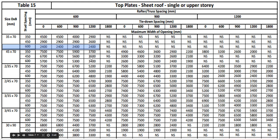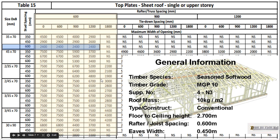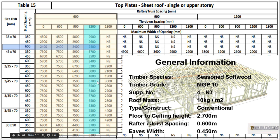Here's our span table, table 15 — top plates, sheet roof. Obviously you have to make sure it's for the right timber species. We look at the rafter spacing: ours is 600, so we're going to use that column. Our truss/joist/rafter spacing is 600. Our tie-down spacing — if we're tying our top plate down to our wall — the standard spacing is 1200, so we'll use 1200. Our stud spacing is 600.